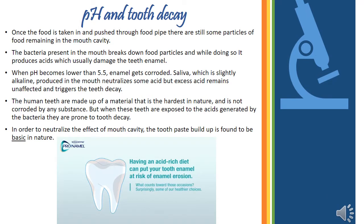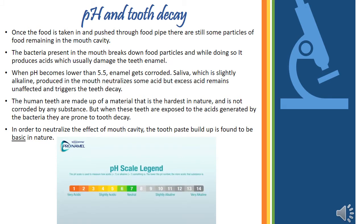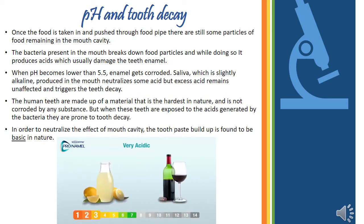Once food is taken in and pushed through the food pipe, there are still some particles of food remaining in the mouth cavity. The bacteria present in the mouth break down these food particles and, while doing so, produce acids which hugely damage the teeth enamel. When pH becomes lower than 5.5, enamel gets corroded. Saliva, which is slightly alkaline, neutralizes some acid, but excess acid remains and triggers tooth decay.